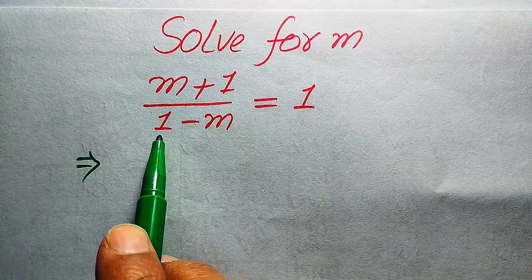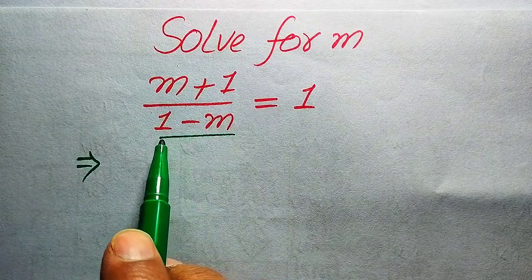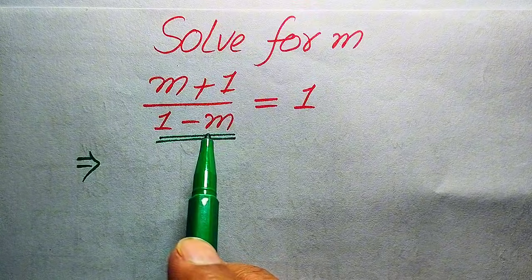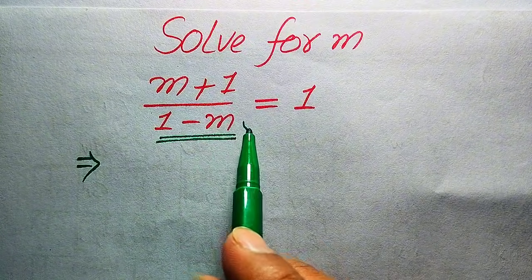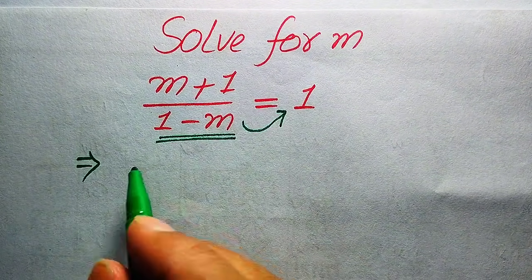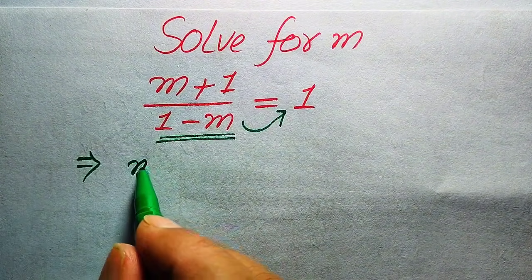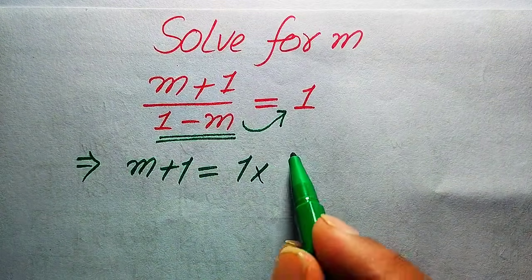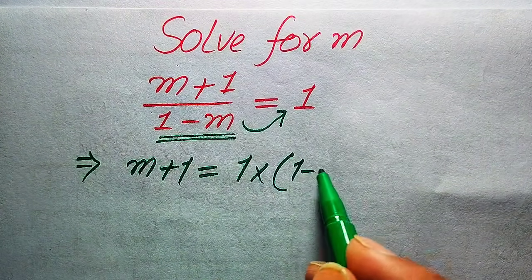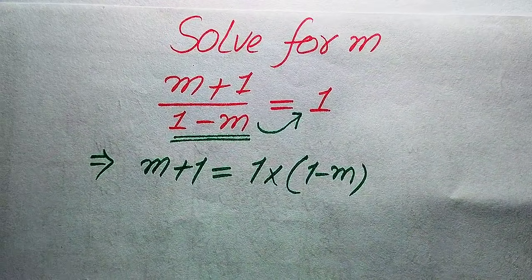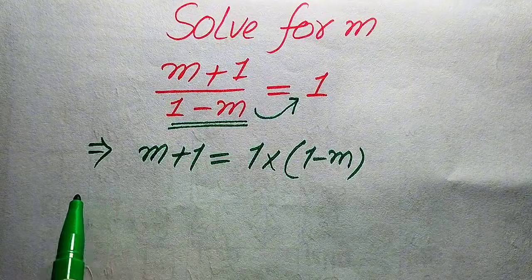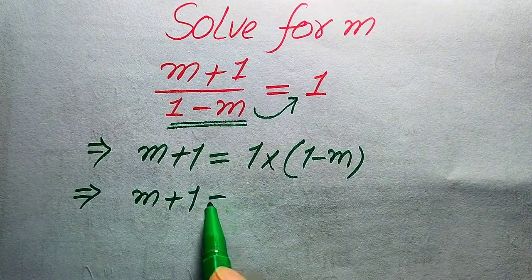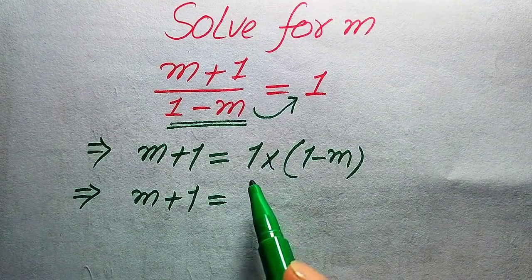Now we move towards the solution. We move the term which lies in the denominator to the right-hand side — when we move it to the right-hand side it is multiplied. It will be written as: m plus 1 equals 1 multiplied by (1 minus m).